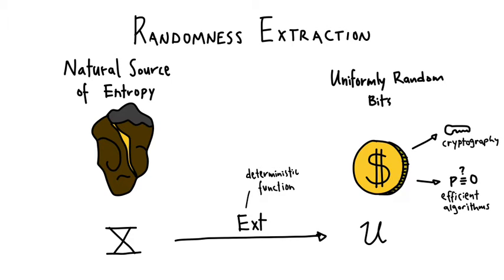However, in reality, the sources of randomness look very, very far from random coin tosses. They tend to be measurements of heat and timings of certain actions and stuff like this. And so randomness extraction is about how we can take these weakly random sources and turn them into excellent random sources — uniformly random bits.